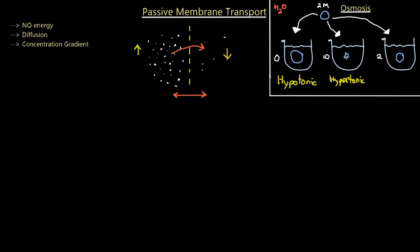In the third scenario, the two-molar sack is dropped into a solution of the same concentration — two moles. There is an equilibrium because the concentrations of water and solute are equal inside and outside, which results in an isotonic solution. The cell will neither shrink nor expand.